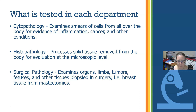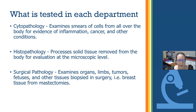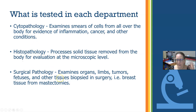Surgical pathology examines the organs, limbs, tumors, fetuses, and other tissues that are biopsied in surgery — such as breast tissue for mastectomies. Surgical pathology is often folded together with histopathology and even cytopathology because what they do is closely related. And that is it — your intro to the clinical lab.